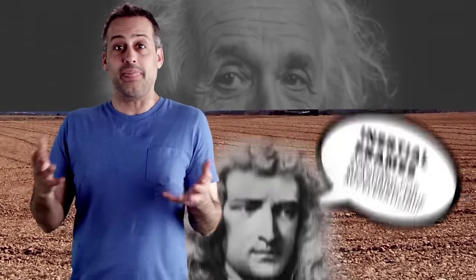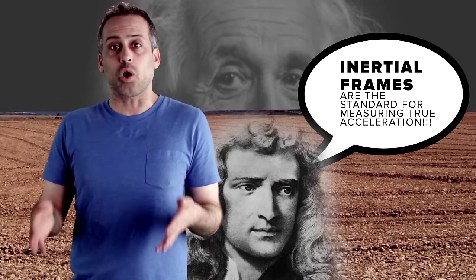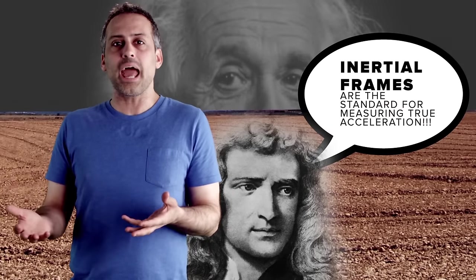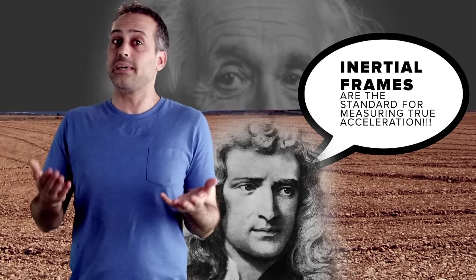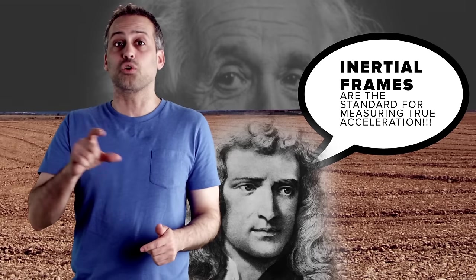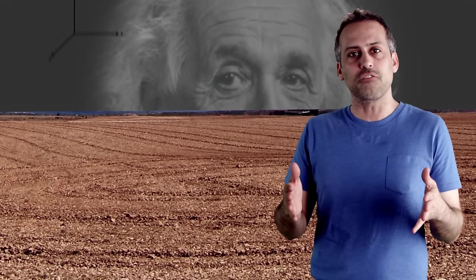Newton would say that's crazy. He would remind us that inertial frames are the standard for measuring true acceleration, so you can only say Earth is really accelerating upward if you can identify an inertial frame relative to which Earth's surface accelerates upward. And there's obviously no inertial frame like that, right? Well, not so fast, says Einstein. Maybe there is. What about a frame that's in free fall?